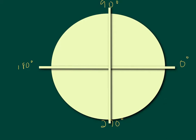The common angles we're going to be dealing with are 30 degrees, 45 degrees, and 60 degrees. And we're going to extend those angles into the other three quadrants and think about the angles that are like those things in these quadrants.